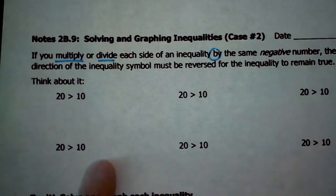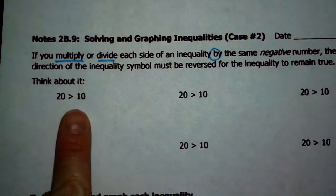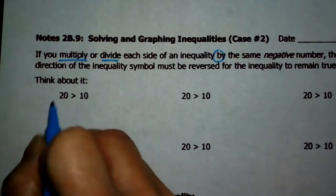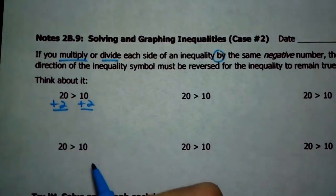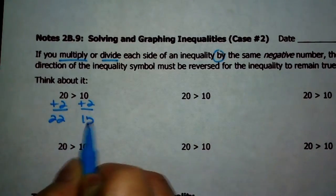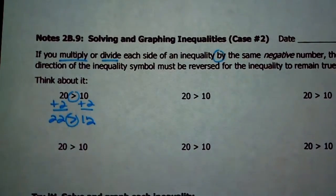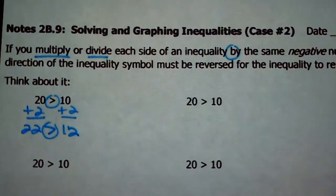So up here I have 20 is greater than 10. This is true, right? And so far, when we're trying to solve things, we have added the same number to both sides. If I added 2 to each side, I would have 22 on this side and 12 on this side. Is 22 still greater than 12? Yeah. So if you add the same number to both sides of an inequality, nothing really changes.